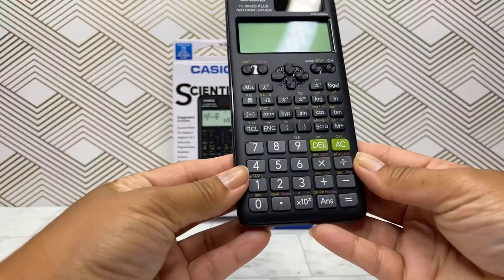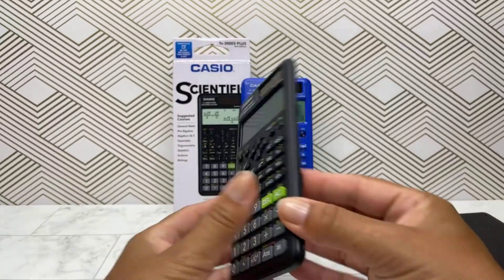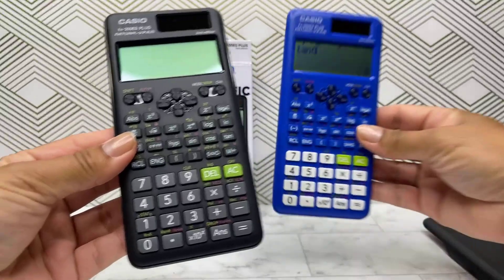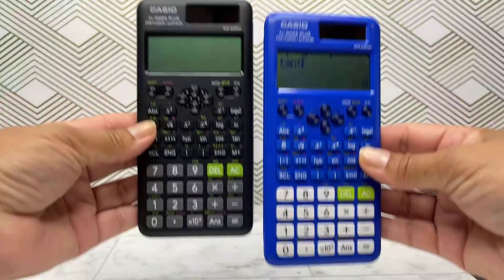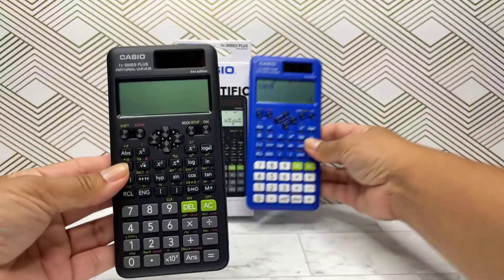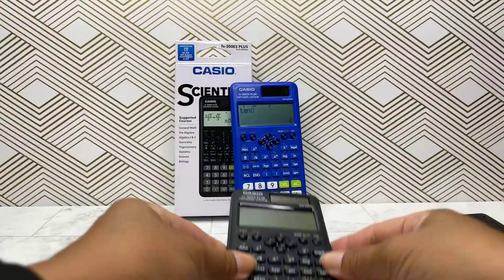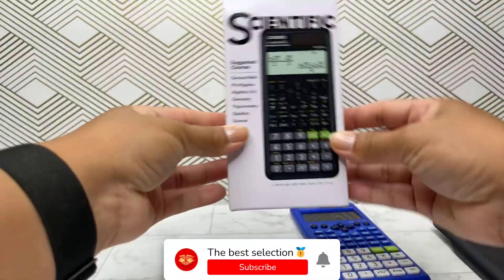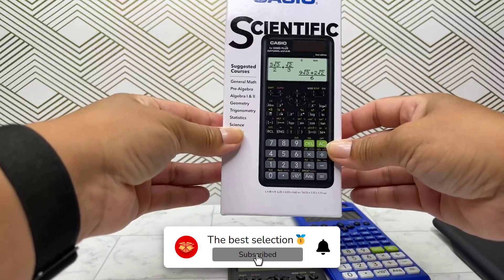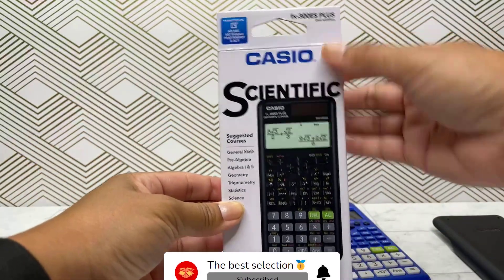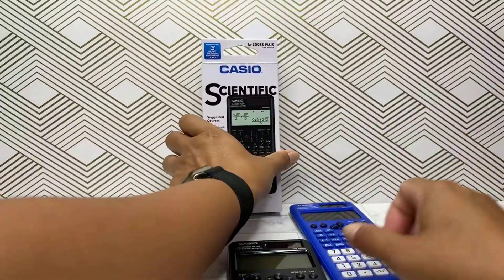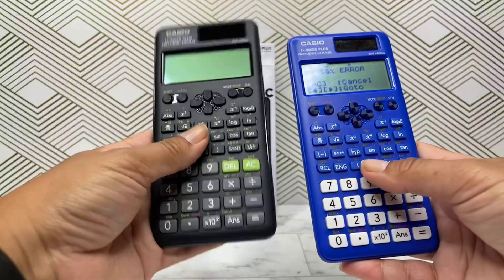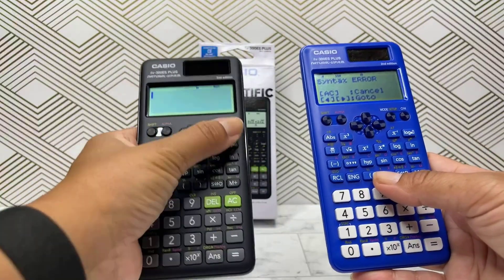One feature I particularly value is its dual-power system: solar with battery backup. This clever combination means you'll never face the dreaded dead calculator scenario, whether you're working under bright lights or burning the midnight oil. There's one small drawback worth mentioning. The screen size isn't particularly generous. If you're dealing with lengthy equations or have trouble with smaller text, you might find yourself leaning in a bit closer. However, this minor inconvenience is offset by the calculator's intuitive layout and responsive keypad, which makes finding and using functions a breeze.